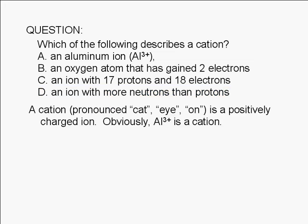A cation is a positively charged ion, so obviously the correct answer is A. The charge of the aluminum ion is positive 3.